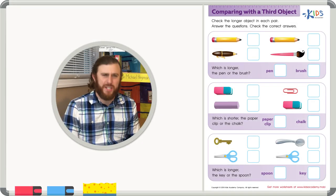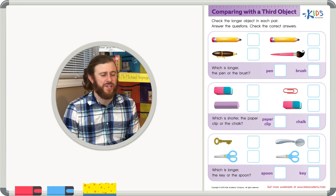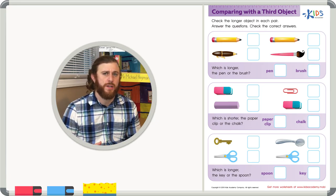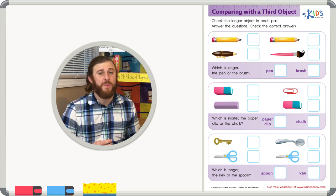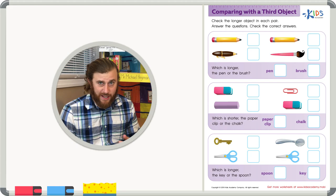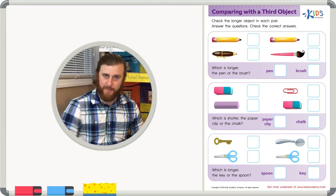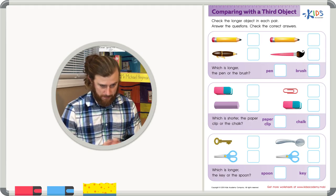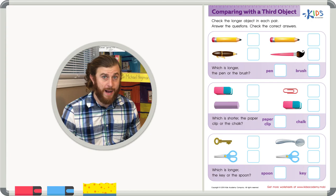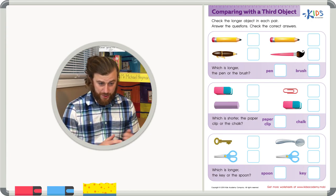Hello boys and girls, it's Teacher Mike here. Today we're going to be looking at a worksheet that asks us to compare objects by length. We're not going to be using a ruler today — we're going to be comparing objects with a third object. Let's read the directions: comparing with a third object — check the longer object in each pair, answer the questions and check the correct answers.